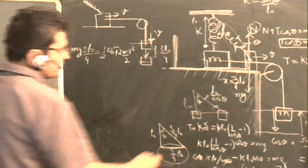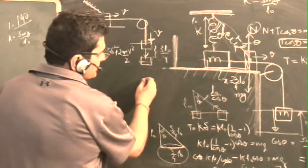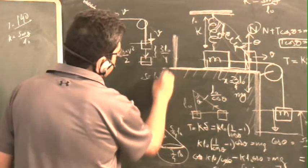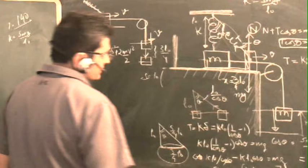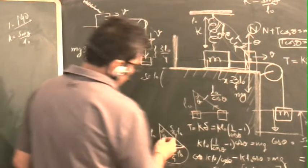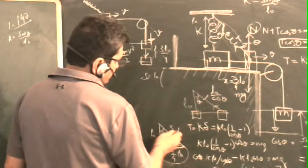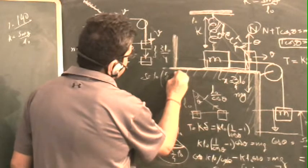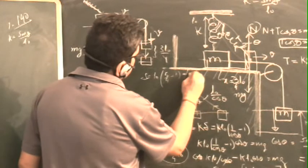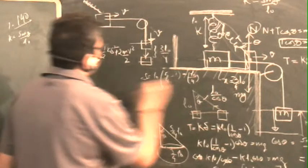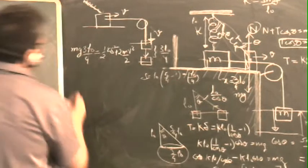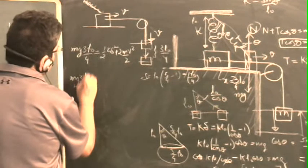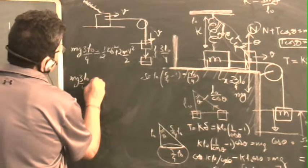What is the value of delta? Delta is equal to L0 times 1 upon cos theta. What was the value of cos theta? It was 4 upon 5, so it will be 5 upon 4 minus 1, which is equal to L0 upon 4. Delta is L0 upon 4. Place the value here: mg times 3L0 upon 4 equals the rest.